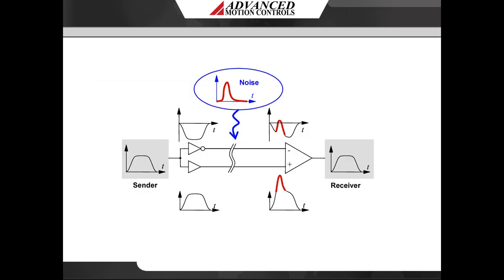If the command input is a plus or minus 10-volt analog signal, it is recommended to use differential inputs at the drive to eliminate common mode noise. In doing so, EMI common to both signals will be ignored. A differential signal is more immune to electromagnetic interference than a single-ended input because the common mode noise signal is cancelled at the receiver when the differential signal is taken. Network commands such as EtherCAT or CANopen are not susceptible to this type of noise.